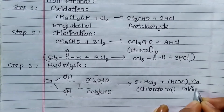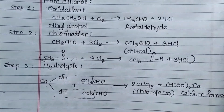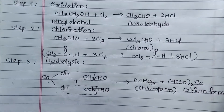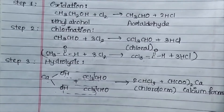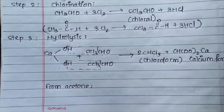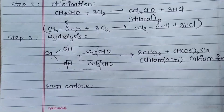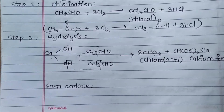The by-product is calcium formate. When we use ethanol, we obtain chloroform. Now, going from acetone to chloroform, there are only two steps involved: first is chlorination and second is hydrolysis. When using ethanol, we have three steps: oxidation, chlorination, and hydrolysis.